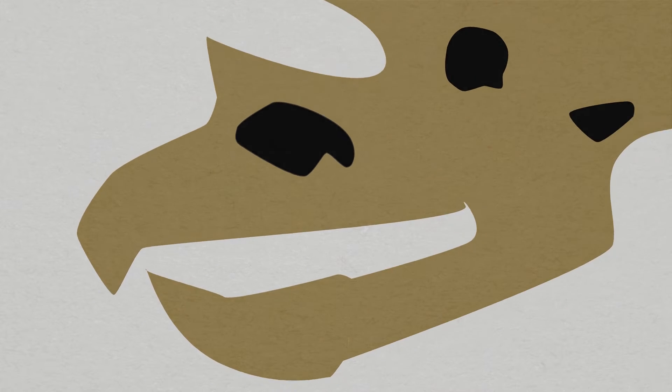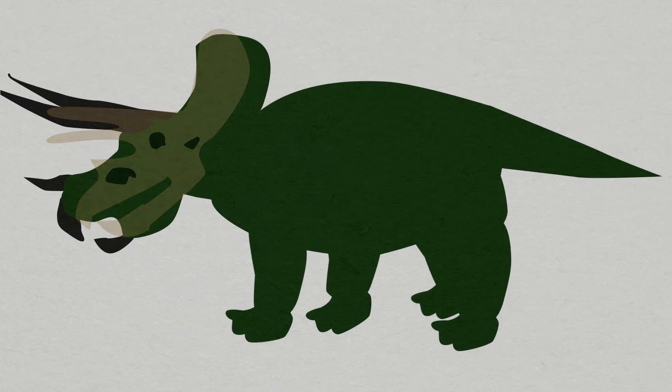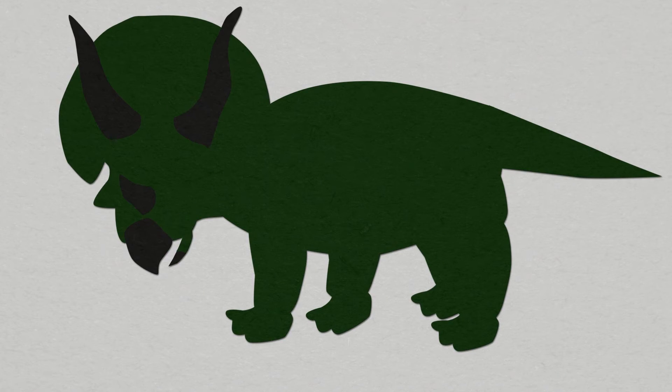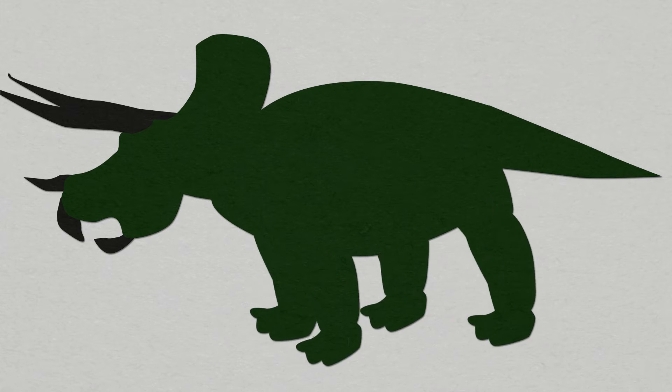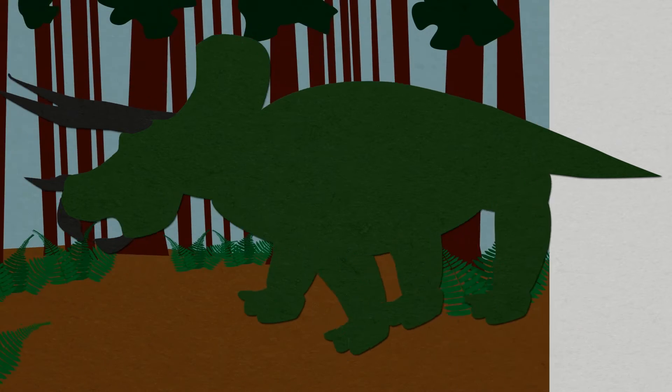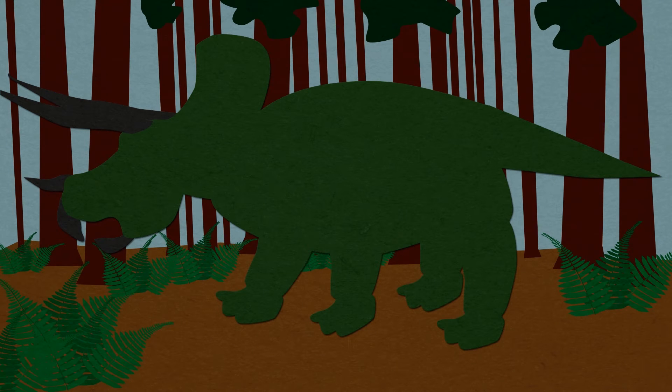Imagine Triceratops, one of the most famous dinosaurs, the three-horned face, a nine-meter-long herbivore with a slicing dentition. These animals are cropping bulky plant matter, and their teeth are allowing them to slice right through it very efficiently.